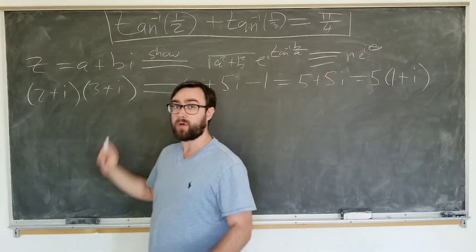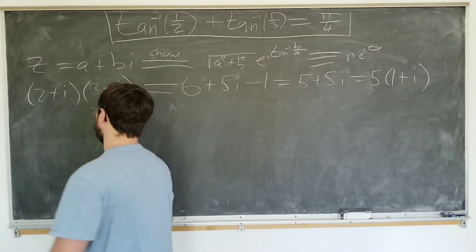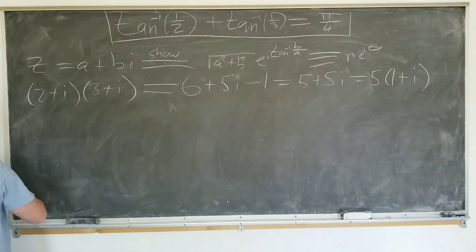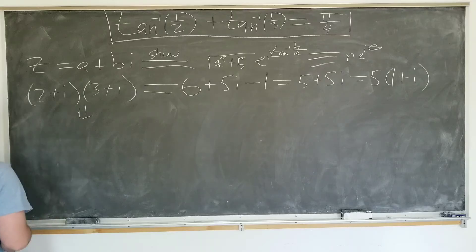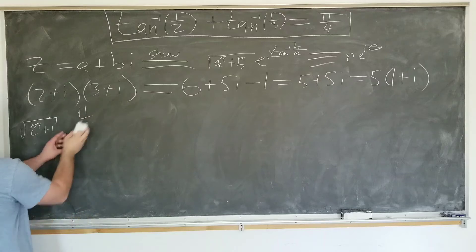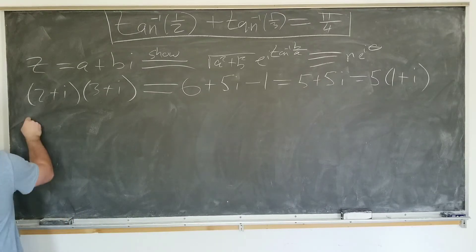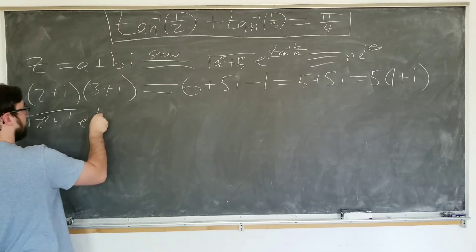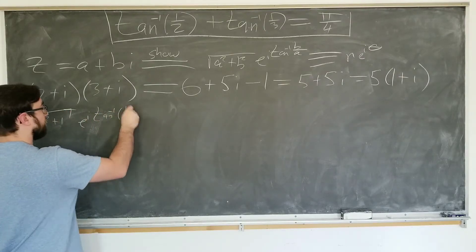Now we're going to write both left and right hand sides in polar form, see what we get. This tells us that square root of 2 squared plus 1, e to the i inverse tangent of one-half,